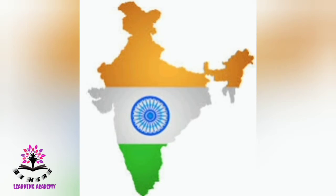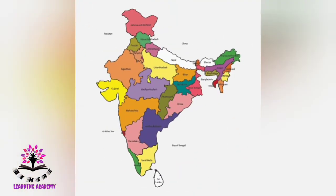Generally we use the words 'nation' and 'country' — do you know their meanings? A country has a specific geographic area and comes under a specific administration. A country having people of the same history, culture, desire, and feeling of oneness is a nation.